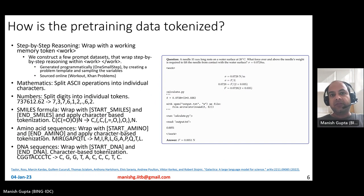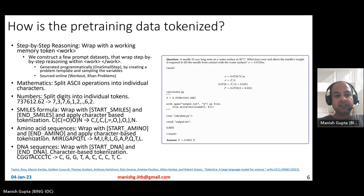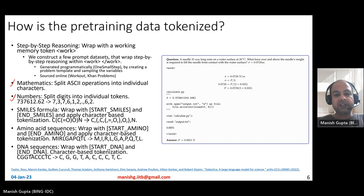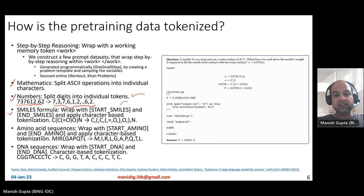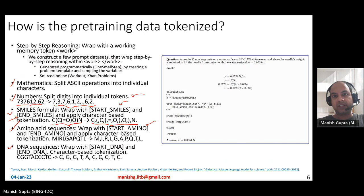Since different modes of data are used, different forms of tokenization are used for each. For numbers and mathematics, SKI operations are split into individual characters — plus, minus, percent — and digits are split into individual tokens. For SMILES formulas representing chemical compounds, the text is wrapped with special start-SMILES and end-SMILES tokens, and the SMILES representation is split character by character. Amino acids and DNA sequences are treated similarly, wrapped with start and end tokens and tokenized character by character.